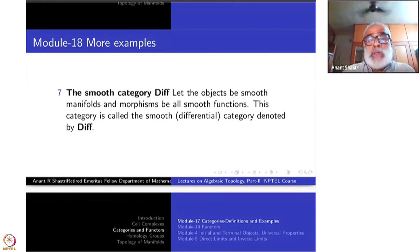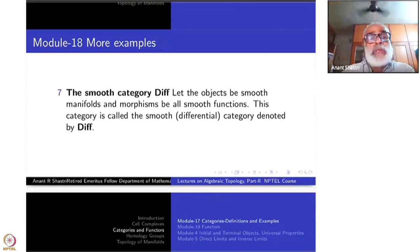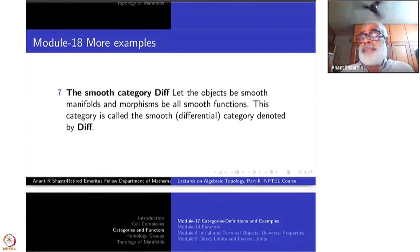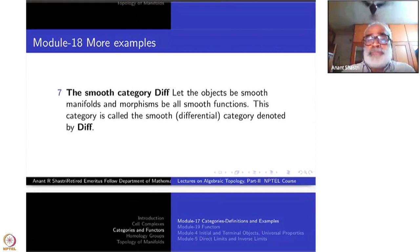What are the objects of this category? They are smooth manifolds, and morphisms are smooth functions. This category is called the smooth category and is denoted by DIFF.